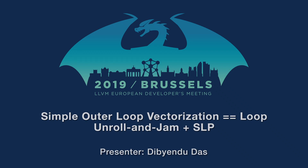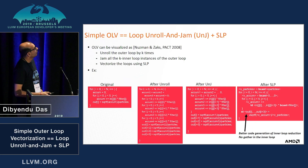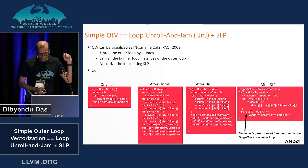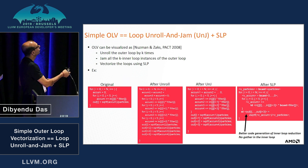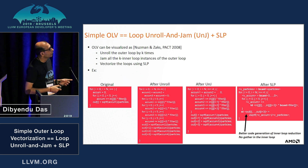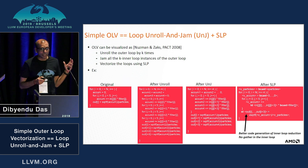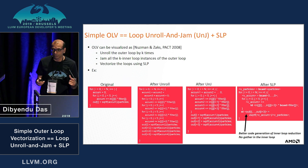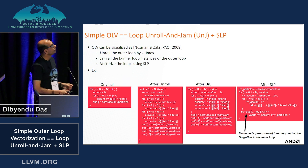I'll be speaking on outer loop vectorization. Simple cases, which many people may know, is equal to loop unroll-jam plus SLP. This was already talked about in the Nuzman-Zaks paper way back in PAC 2008. What you do is unroll your outer loop K times, then jam all your inner loops together, and then do SLP on that. As a result, what you get is something very similar to general outer loop vectorization. This was the basic premise with which we start.